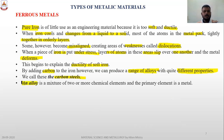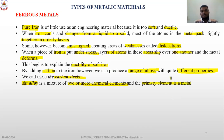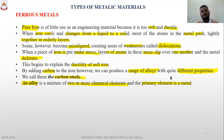Now talking about alloys. An alloy is a combination of two or more chemical elements where the primary element is a metal. When we combine two metals with different properties by melting and solidifying them together, the resulting mixed compound is known as an alloy.